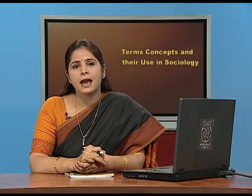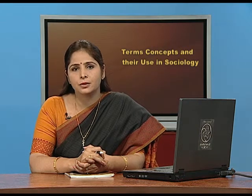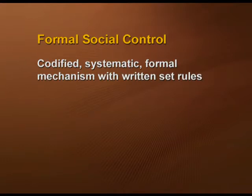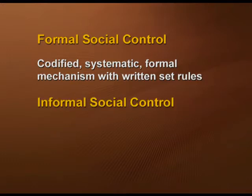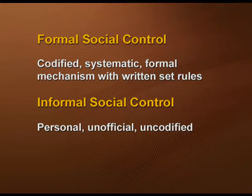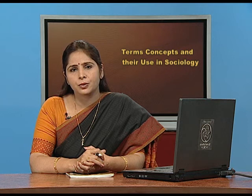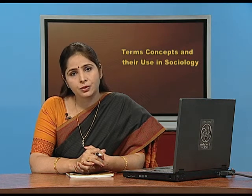There are two types of social control. Formal social control is a codified, systematic, formal mechanism — these are written rules, for example, law. Informal social control, on the other hand, is personal, unofficial, and uncodified.